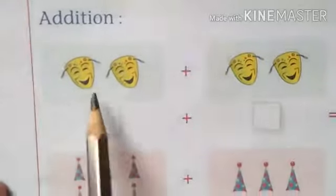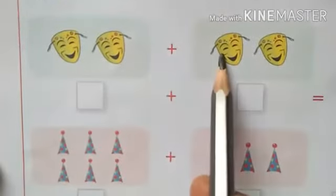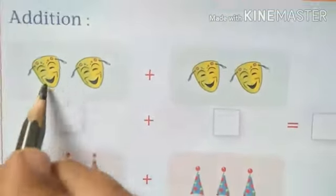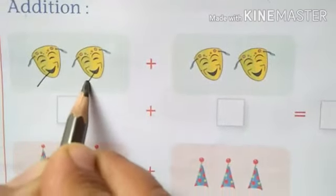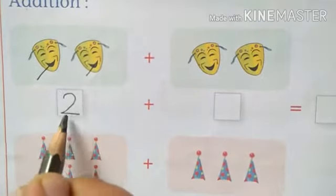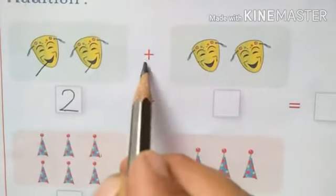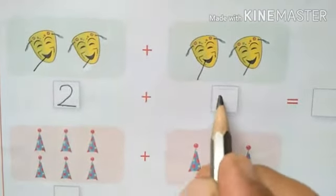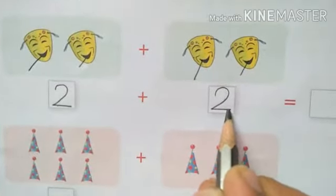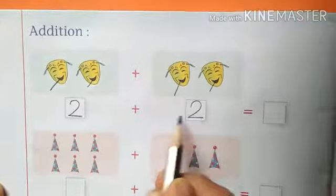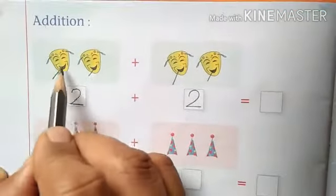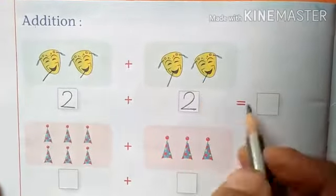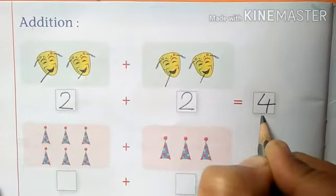So addition ka matlab hai — yahan jo jo objects diye hain unko kya karna hai, donon ko jodna hai, donon ko saath mein milana hai. Okay? So hume kya karna hai yahan — objects ko count karenge. Let's count: One, Two. Write the right number, Two, in the box. Now plus — isko kya bolte hain? Plus. Kira se count karenge: One, Two. Two plus Two — two plus two kitna hoga? To hume kya karenge — yahan sare objects ko saath mein count karna hai. One, Two, Three, Four. So yeh box mein likhenge hum: Four. Okay, students?